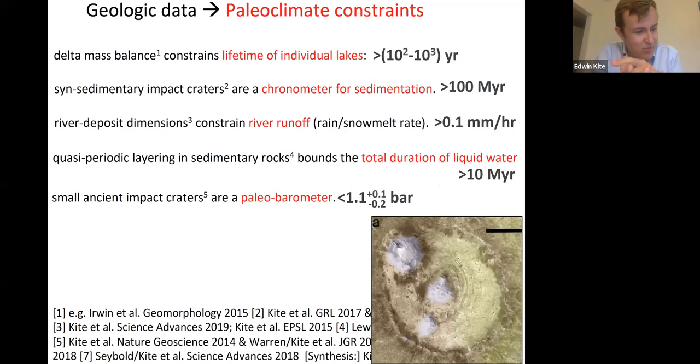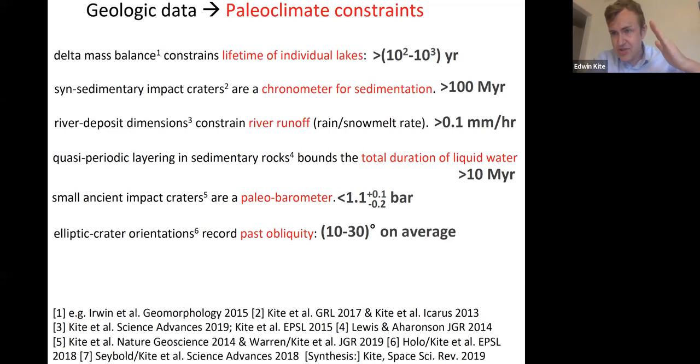What was the total duration of liquid water if things were intermittent? There's orbital forcing of quasi-periodic layers in the sedimentary logs. By counting the orbitally forced beds and bundles, we get a total duration of liquid water that was more than 10 million years, probably much longer. An important boundary condition is the atmospheric pressure. When we find small impact craters interbedded within the sediments, that gives us an upper limit on past atmospheric pressure. We've figured out how to use elliptic crater orientations to get the ancient obliquity. We thought it wasn't much different on time average than the Earth. We have lots of indications that the climate was arid.